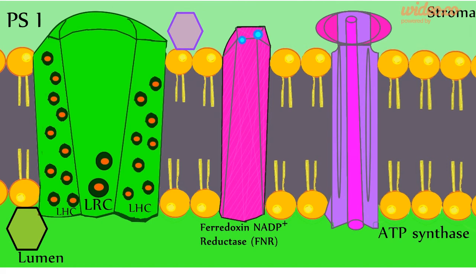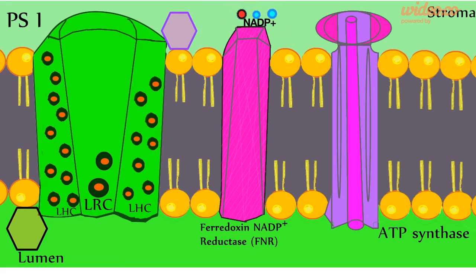Then NADP+ from the stroma will come to the FNR along with a hydrogen ion, where the two electrons, the hydrogen ion, and NADP+ will converge and become NADPH.